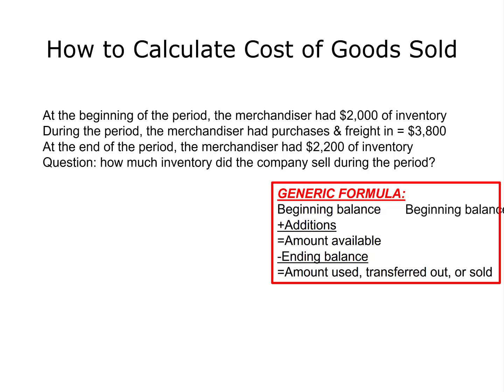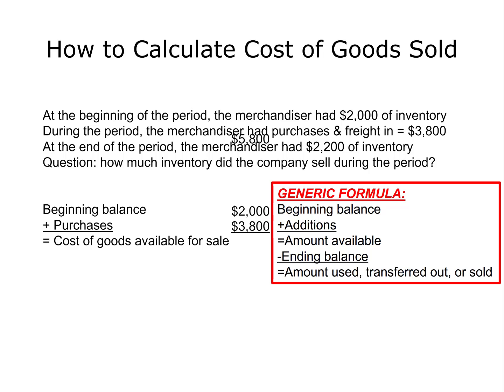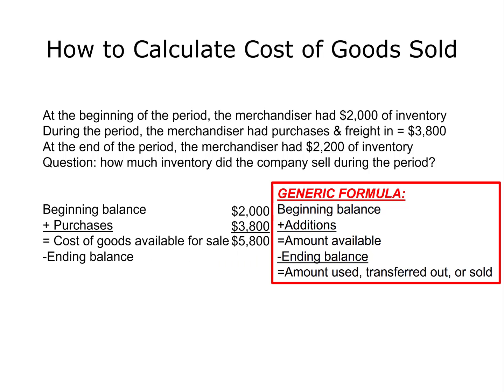First, we need our beginning balance, which was $2,000. Then we add our purchases. Remember, freight in is just the cost of shipping for the inventory, so we include that in the cost of the inventory — purchases were $3,800. The cost of goods available for sale is $2,000 plus $3,800, which gives us $5,800 of inventory on the shelves ready to be sold. If we had $5,800 available for sale and ended up with only $2,200, we subtract the ending balance of $2,200, and that gives us cost of goods sold of $3,600.